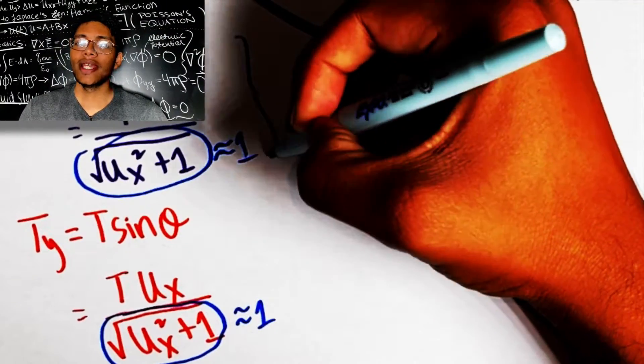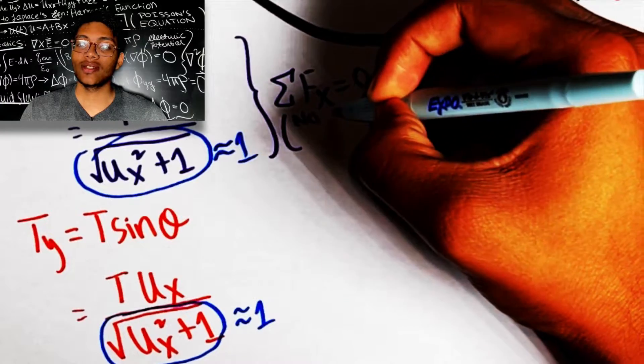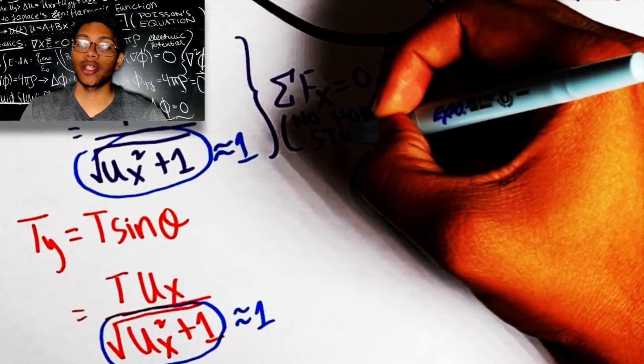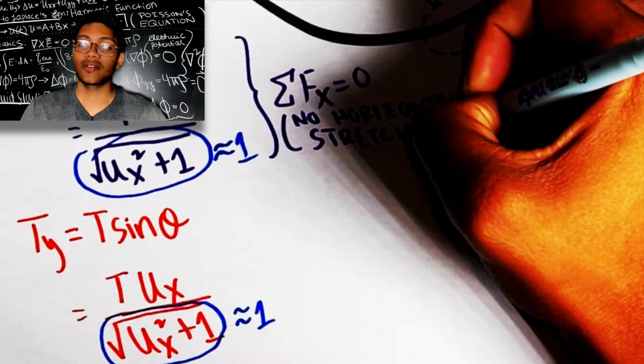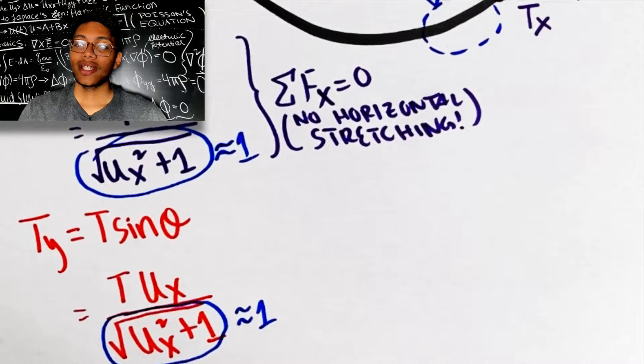Now we can simply use Newton's second law, which is F equals ma. In this case, F is equal to simply the vertical forces. Since there is no horizontal stretching, we assume that the horizontal forces simply add up to 0. So that gives us the following equation for F equals ma.